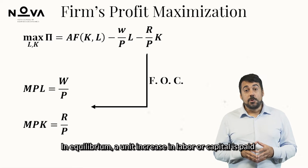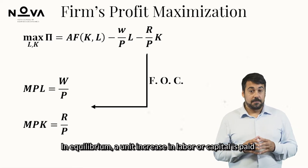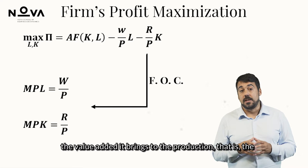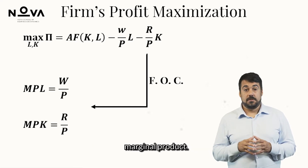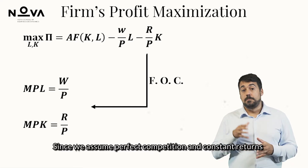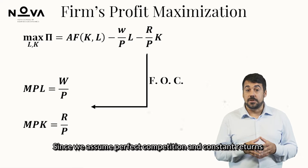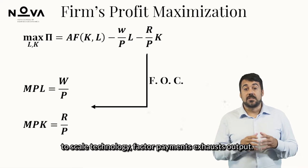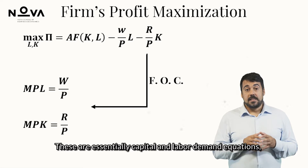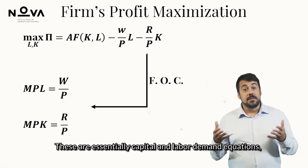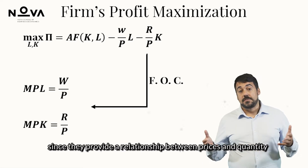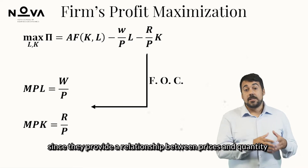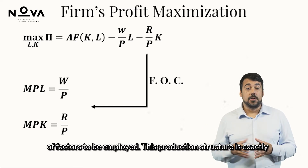The objective function is maximized by choosing to employ capital and labor according to the following first-order conditions. In equilibrium, a unit increase in labor or capital is paid by the value added it brings to production — that is, the marginal product. Since we assume perfect competition and constant returns to scale technology, factor payments exhaust output. These are essentially capital and labor demand equations, providing a relationship between prices and quantity of factors employed.